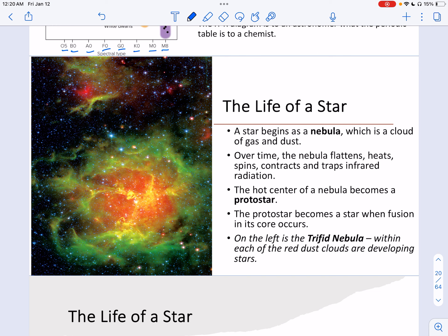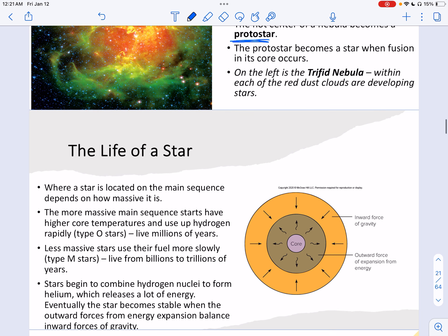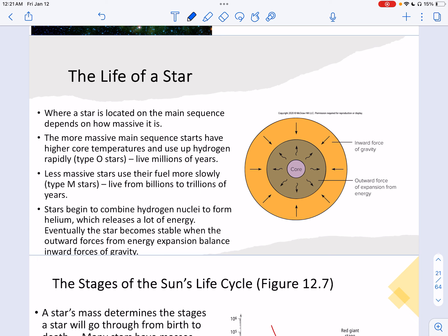So again, the life of stars. Star begins as a nebula, which is a concentration of dust and gas. Over time, nebula flattens, heats up, spins, contracts, and traps infrared radiation. The hot center of nebula becomes a protostar. And the protostar becomes a star when fusion in its core occurs. Where the star is located on the main sequence, the diagram that we showed above, depends on how massive it is. So it really depends on how massive it is. The more massive main sequence stars tend to have higher core temperatures, and they use up hydrogen more rapidly. Then they end up living millions of years. Less massive stars use their fuel more slowly, more efficiently, and live from billions to trillions of years.